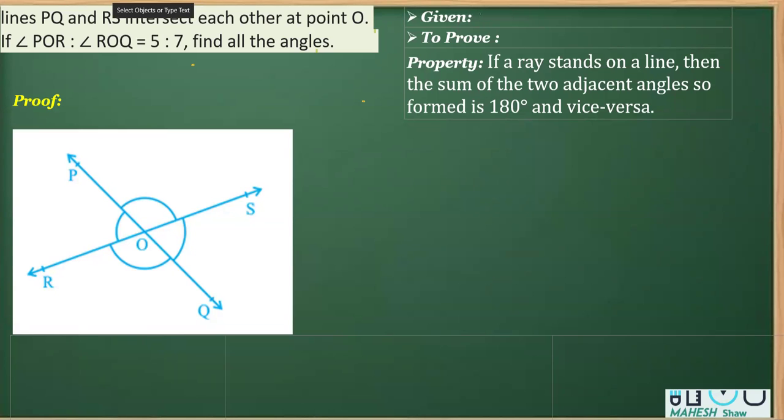Here in this video, I'm going to solve one question that is based on the property called linear pair. It says that if a ray stands on a line, then the sum of two adjacent angles so formed is 180 degrees.